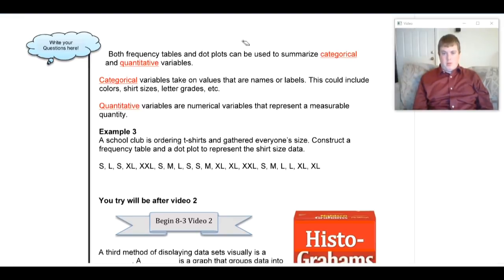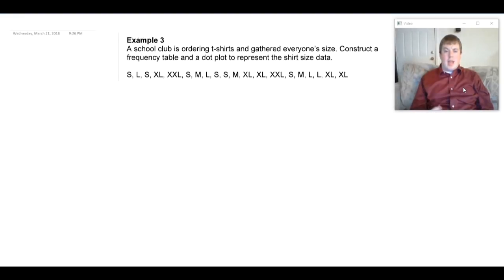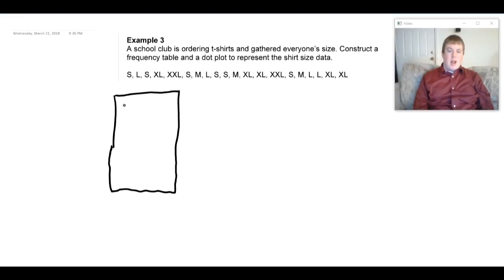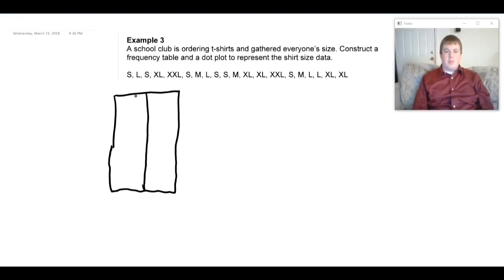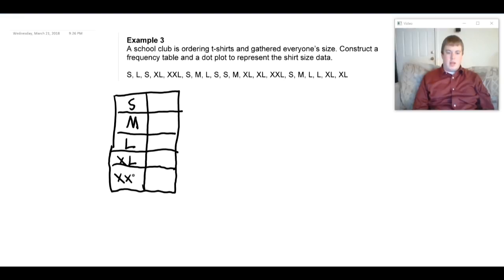Most examples in this statistics unit will lean toward quantitative, but we want to expose you to categorical as well. For example three, you may need to do this on notebook paper since the textbook doesn't leave much room. We're going to construct a frequency table and dot plot for shirt size data. For a categorical frequency table, each category is simply its own group — smalls together, mediums together, larges together, extra larges together.